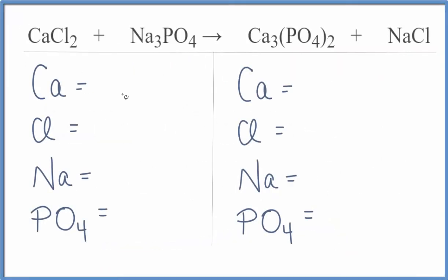Let's count the atoms up. On the reactant side, we have one calcium, two chlorines, three sodiums.